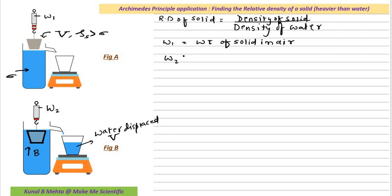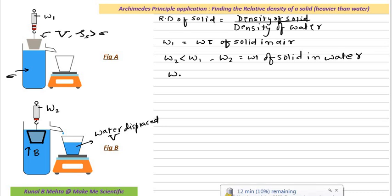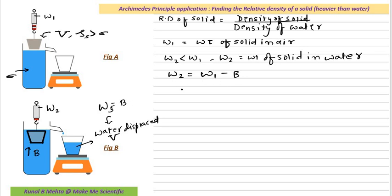Let us assume W2 is the weight recorded in water. W2 would of course be less than W1, and W2 is the weight of solid in water. We already know the equation: W2 equals weight in air minus the buoyant force. In Archimedes' principle, I have already discussed that W3, the weight of the water displaced, is itself equal to the buoyant force. So instead of B, the buoyant force can be written as W1 minus W2, or equivalently as W3, the weight of the water displaced.